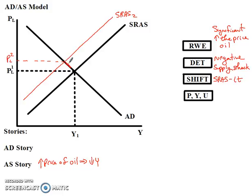Now on the aggregate demand side, that's going to be a story about moving along the curve. As companies reduce production, that's also going to cause the price of goods and services to rise. This is the price of all goods and services — not just oil — so we're getting some inflation. As production goes down, the price of all goods and services begins to rise.